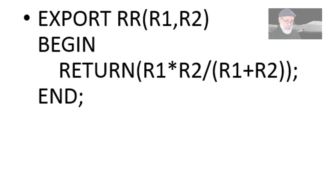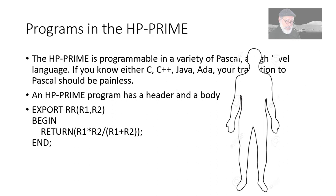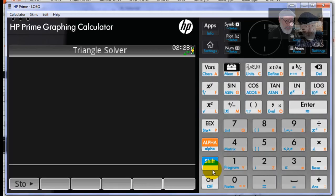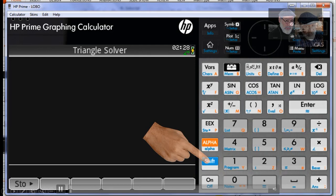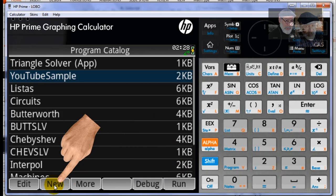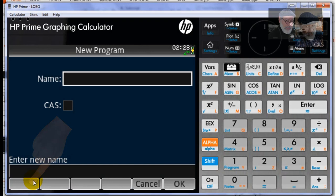And between, what is going to happen: it will return a value. The value is multiply both parameters R1 and R2, divide by the sum. How about we enter that in the calculator? Shift, program (the key under 1), and then new program. The name of that program will be simply RR, two resistors in parallel. OK.